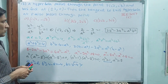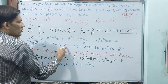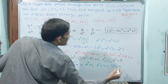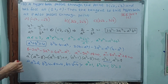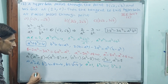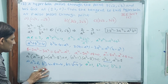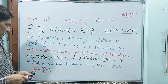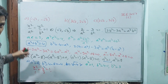Taking a squared equals 1, b squared equals 4 minus 1, so b squared equals 3. Now write the equation of the hyperbola: x squared by 1 minus y squared by 3 equals 1. Now find the tangent at point (root 2, root 3).